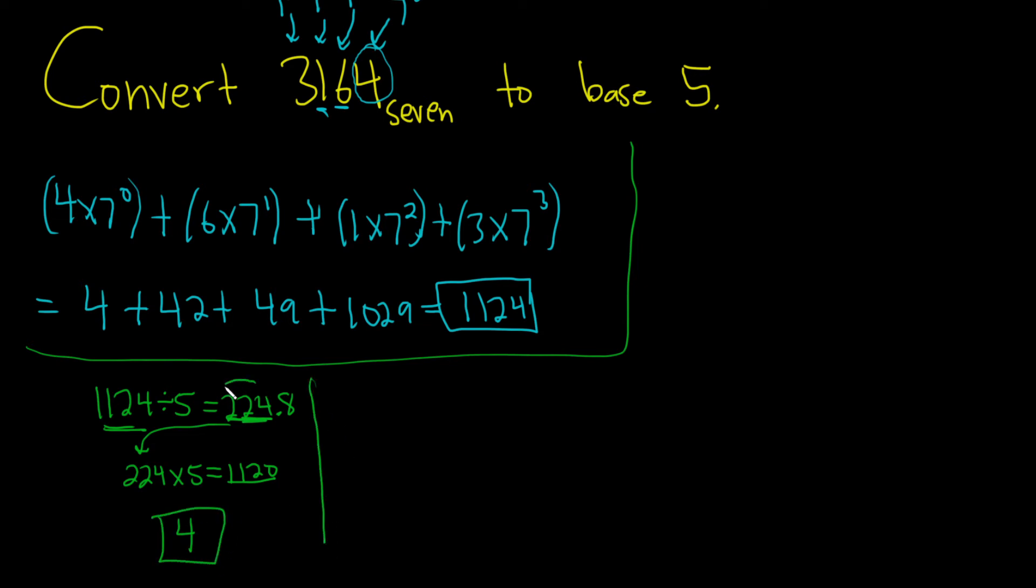Then you do it again, but you do it with this number. So 224 divided by 5, I got 44.8. Then you take this number and multiply it by 5. So 44 times 5, I got 220. Then take these and subtract. Remainder is 4 again. Really nice.